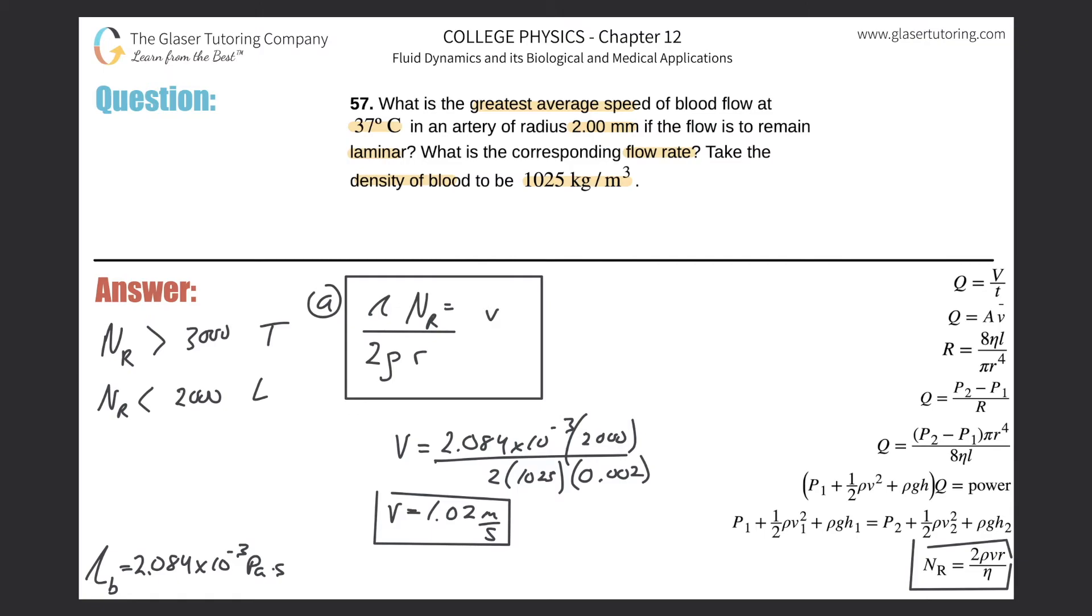The second question is asking us what is the corresponding flow rate. We just found velocity; how do I connect it to flow rate? We use the equation Q equals the cross-sectional area of the tube multiplied by the average velocity of the fluid through the tube.